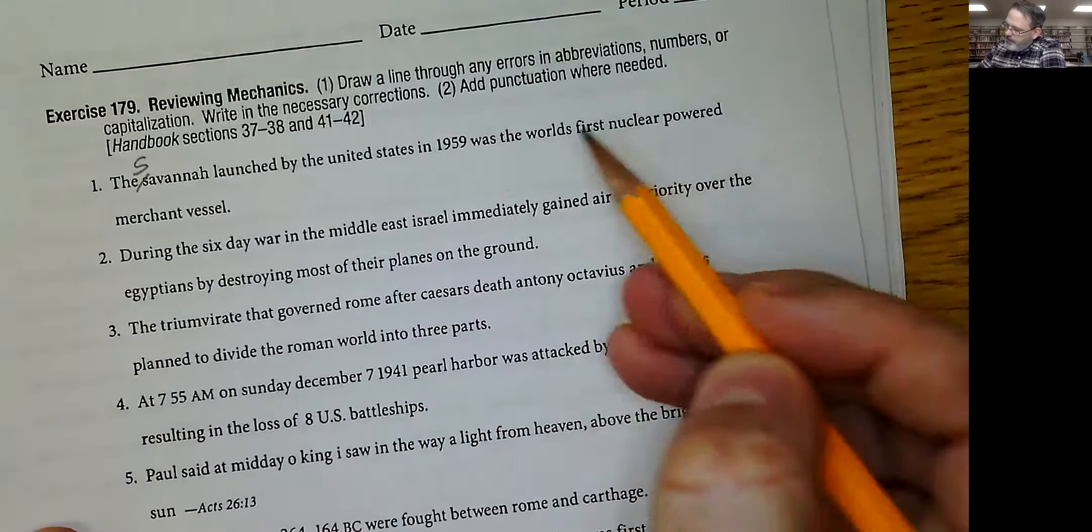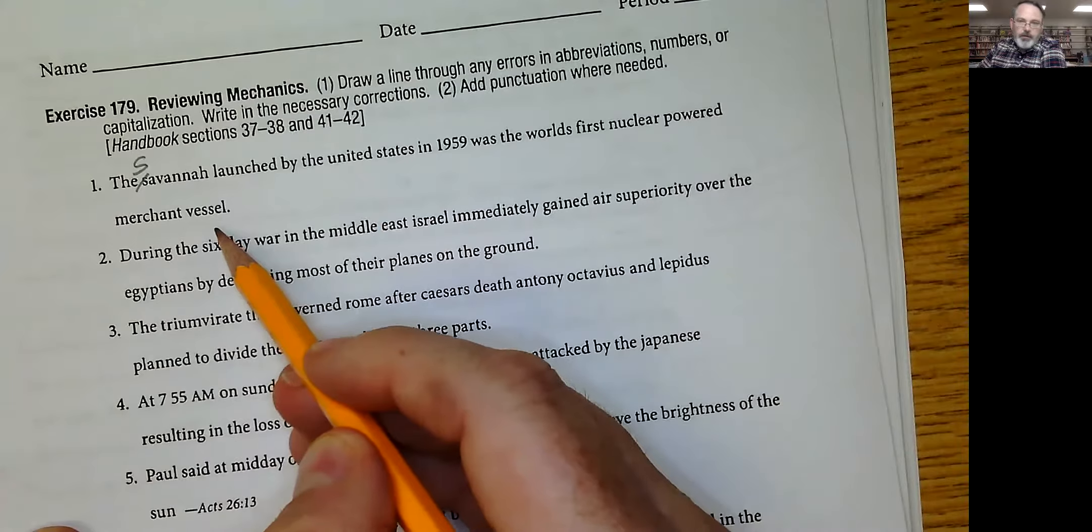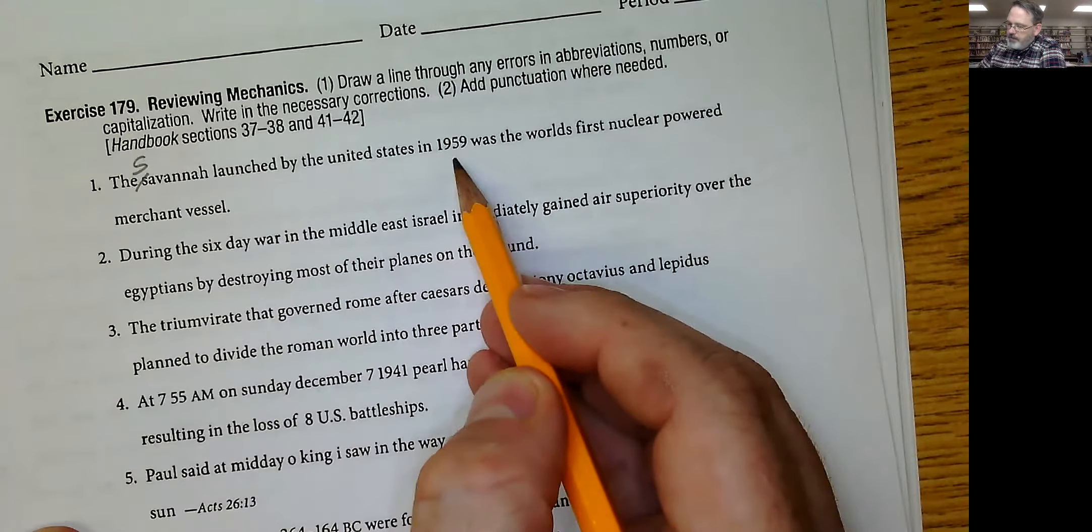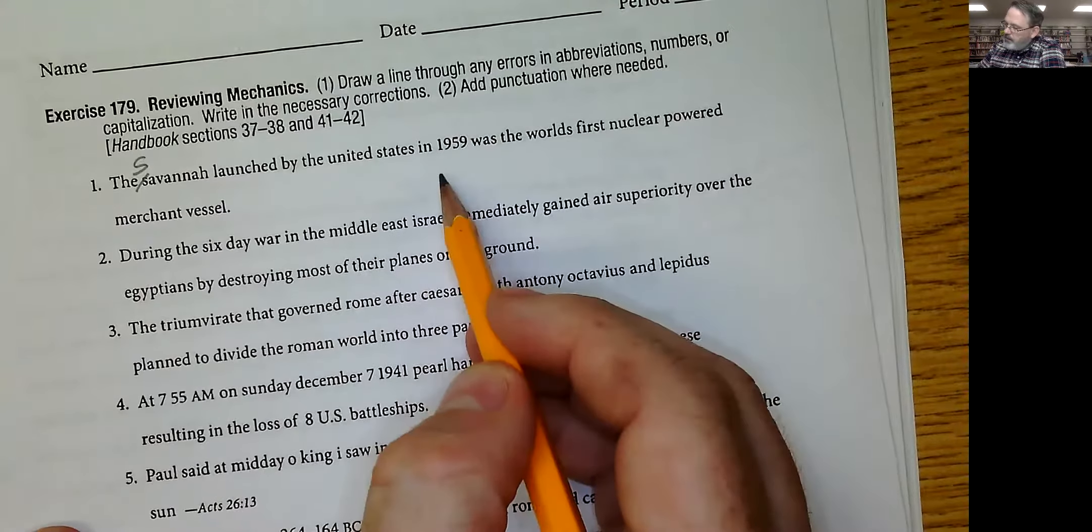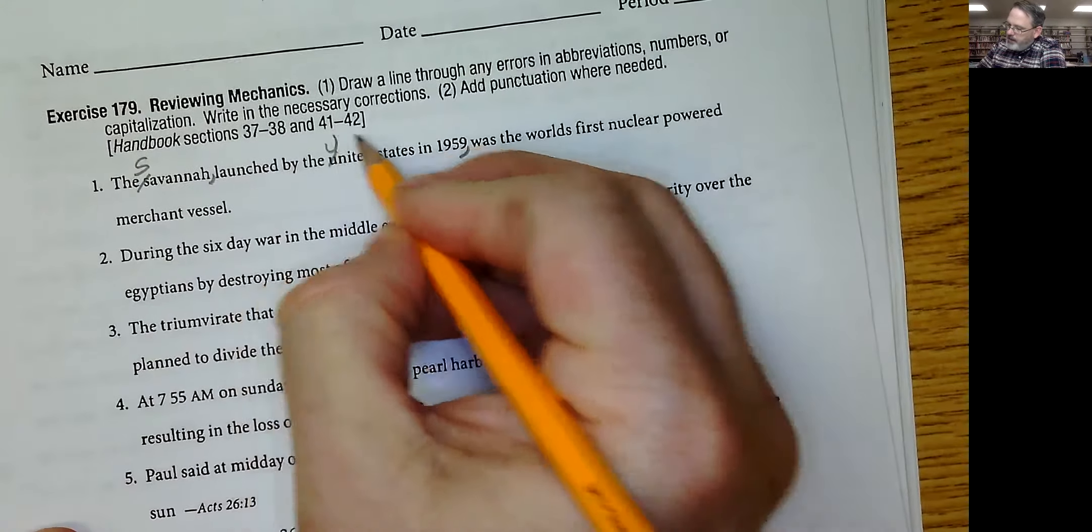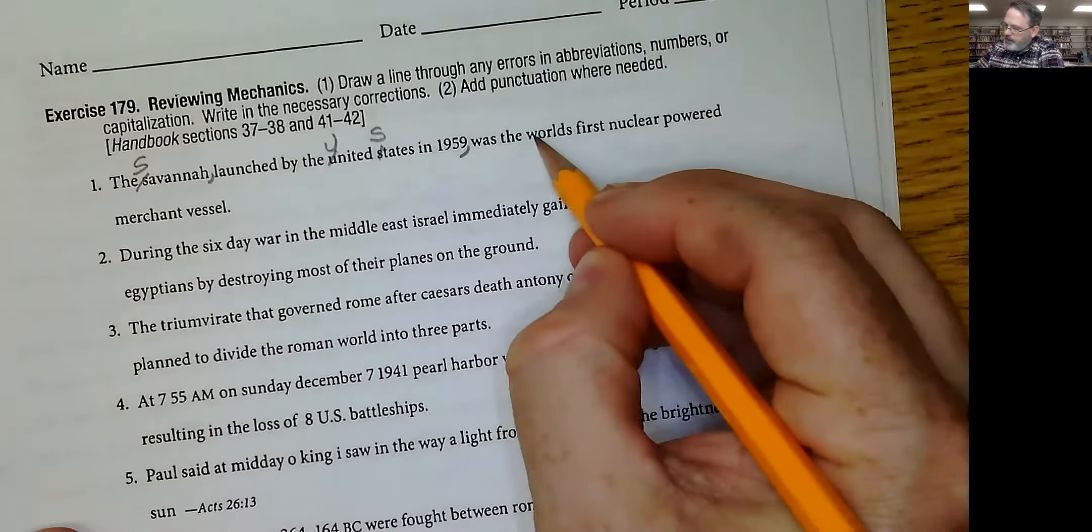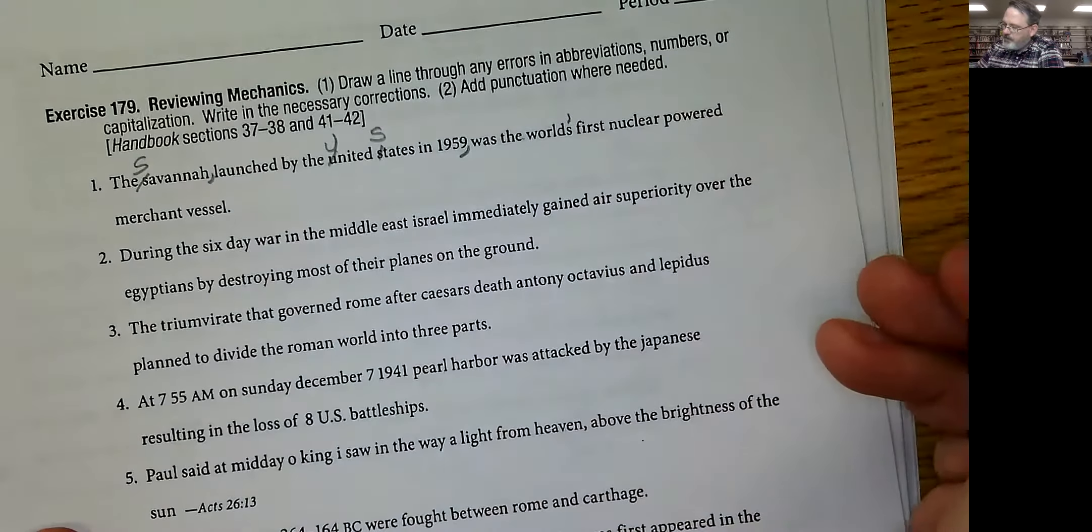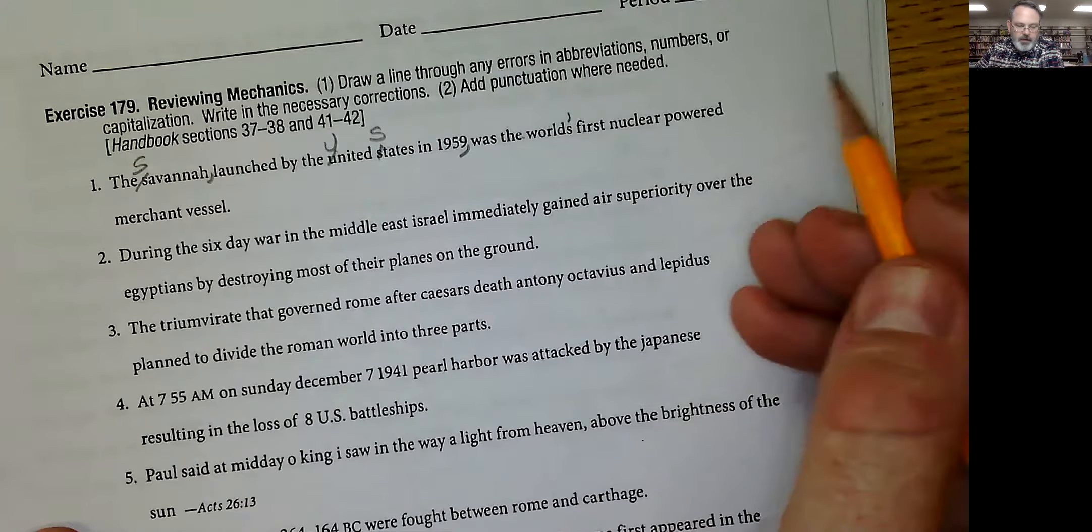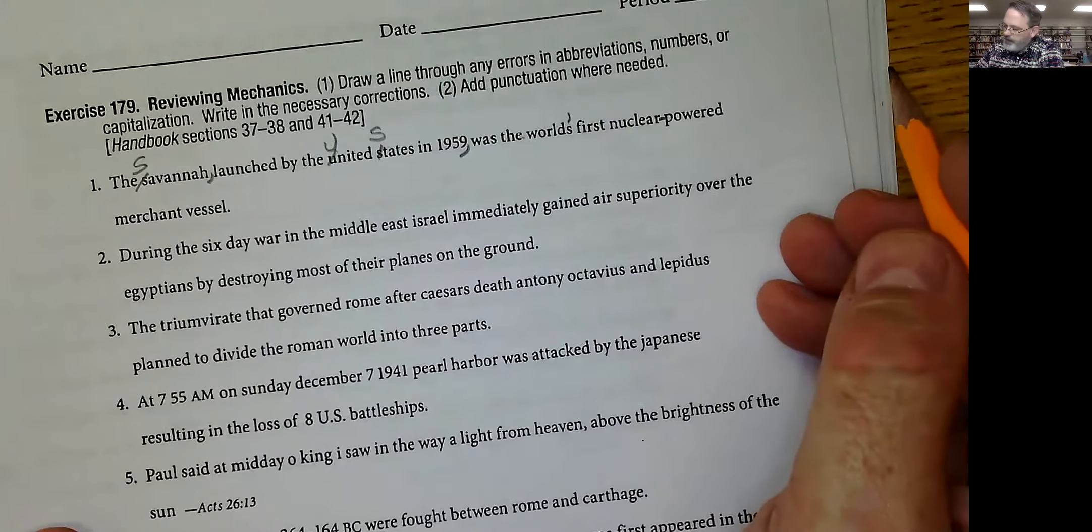The Savannah, that's the name of a nuclear powered merchant vessel, so you know that those names have to be capitalized. Launched by the United States in 1959. That is a positive phrase. Needs to have commas, United States. And then the world's, it's possessive, so it needs an apostrophe there between the D and the S. And then nuclear powered is a hyphenated word. And that looks like it.